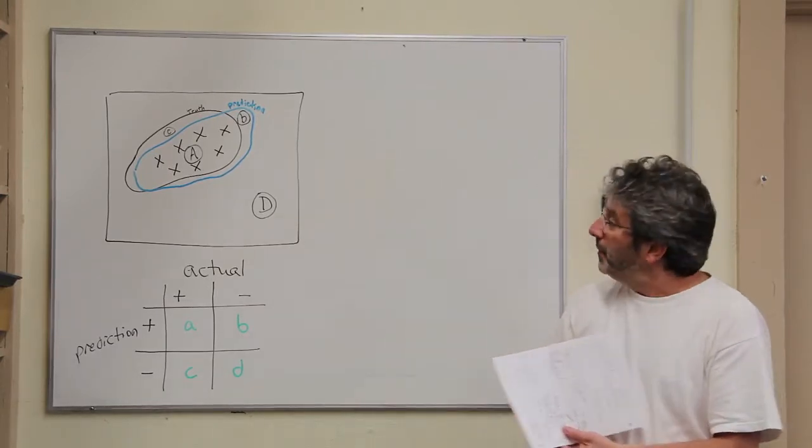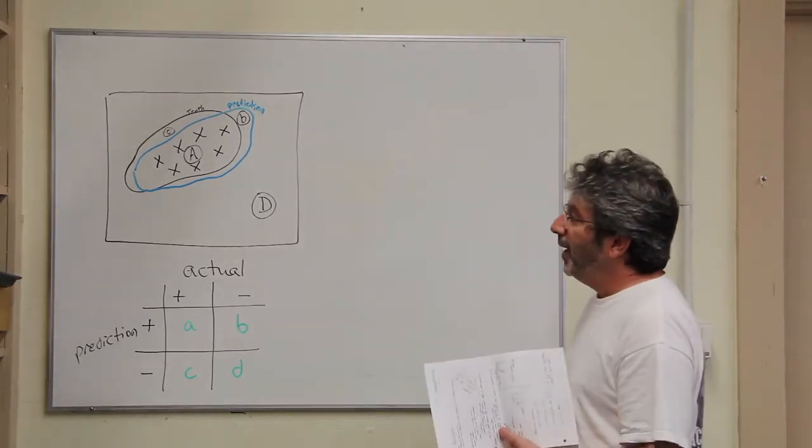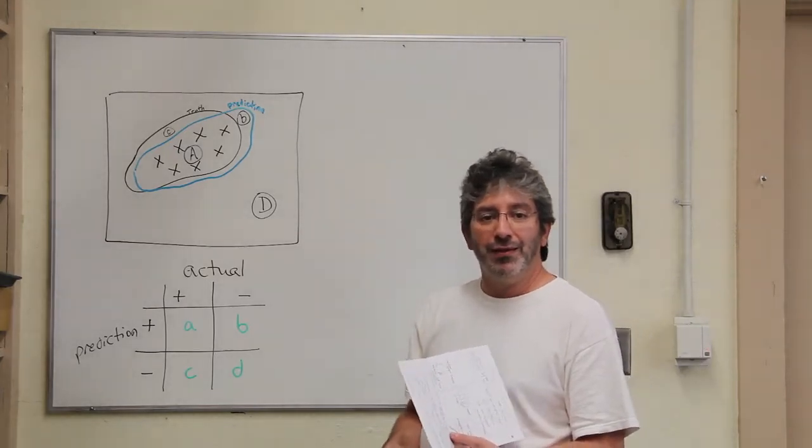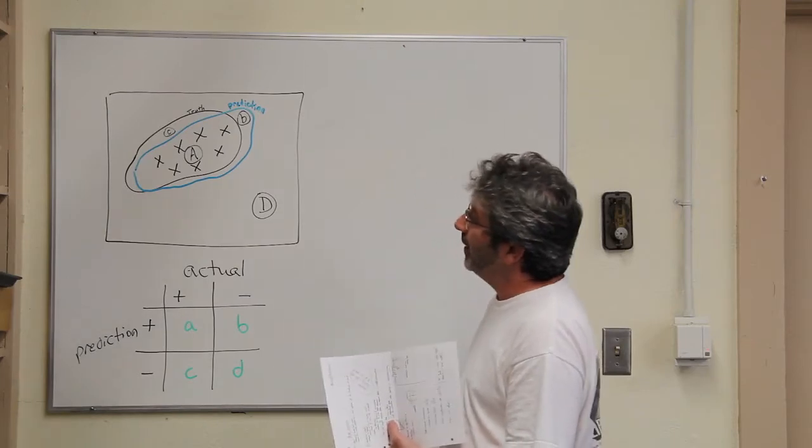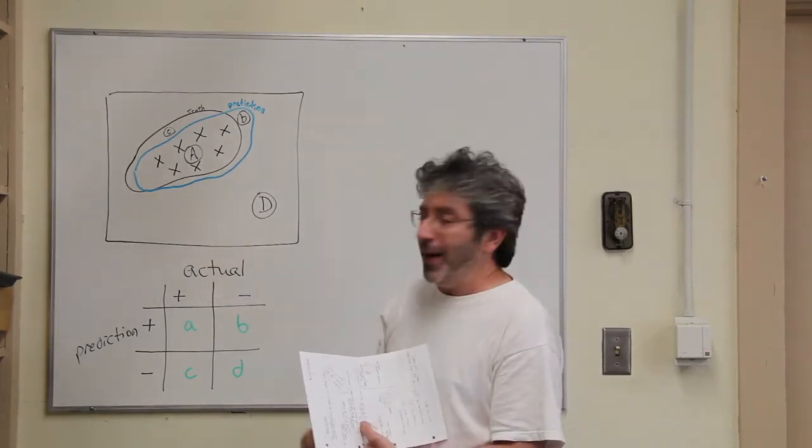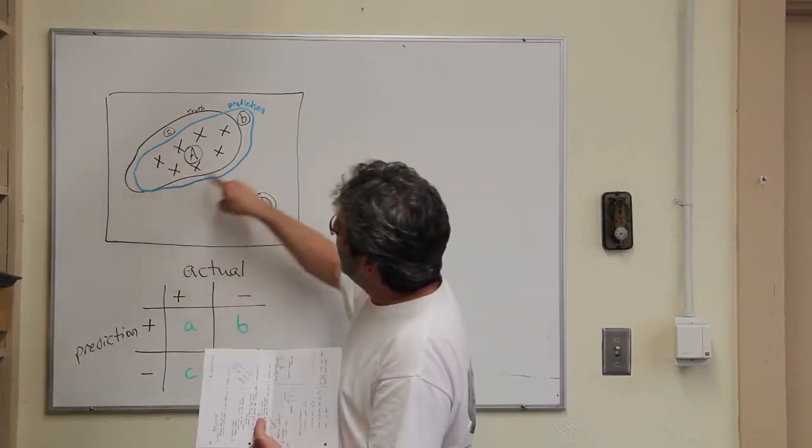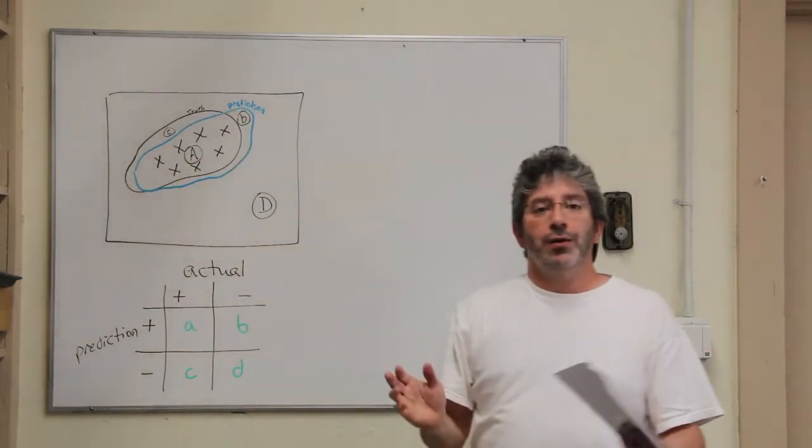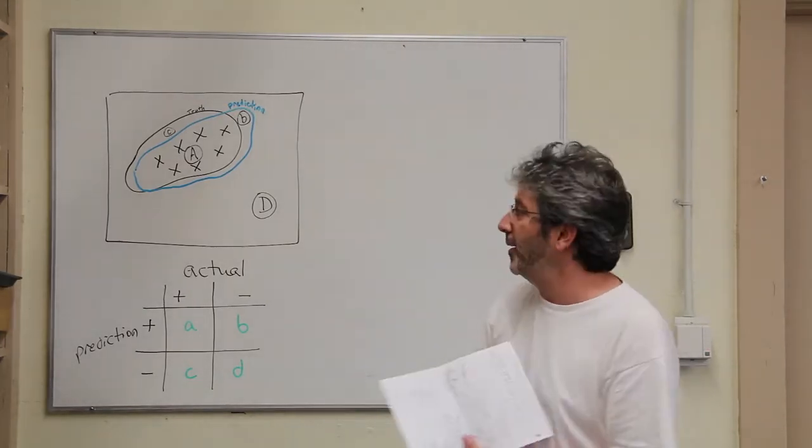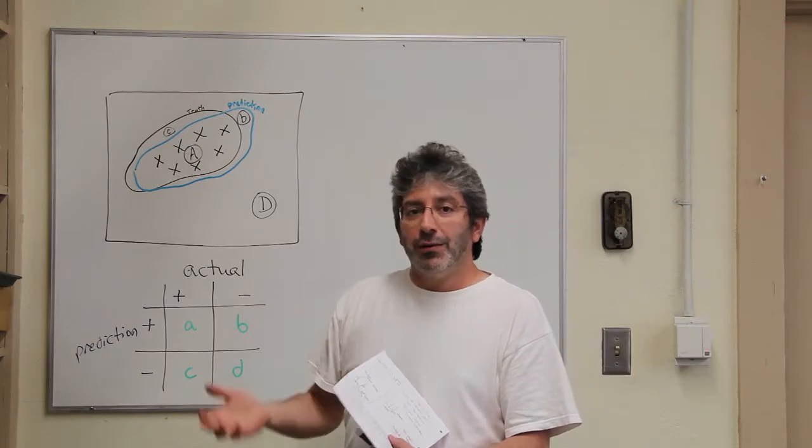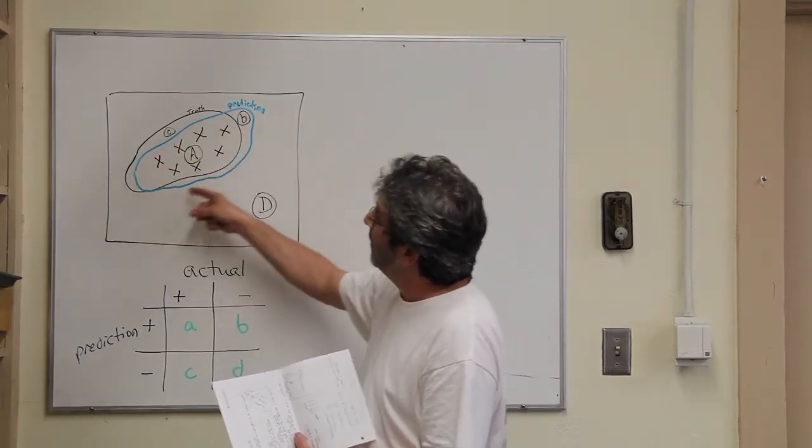Essentially what we want to do is start thinking about what a spatial prediction looks like and what the sorts of data that we might overlay on that prediction would be like. I've drawn a very simple map. Essentially, you can imagine this as being latitude and longitude. And this black line outlines what would be the true distribution of a species if we were to know it. Now, we do our modeling exercise and we produce a prediction, which I've shown as this blue line.